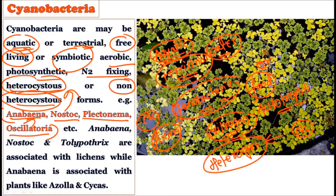Anabaena is known for its symbiotic association with Azolla. Nostoc is known for its symbiotic association with Anthoceros. So cyanobacteria may be aquatic or terrestrial, free-living or symbiotic. They can form symbiotic associations. They are aerobic, photosynthetic, and nitrogen-fixing. Sometimes heterocysts are present, sometimes not. Examples include Anabaena, Nostoc, Plectonema, and Oscillatoria.